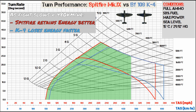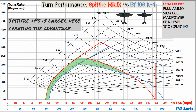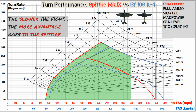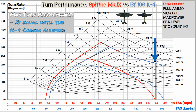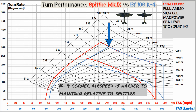As the fight slows below this airspeed, the Spitfire starts retaining energy better and the 109 loses energy faster, as the specific excess power regions diverge — the positive region for the Spitfire ends up much larger than the 109's. If the Mk9 can get close enough to the K4 while it's slow, or force it to become slow, it becomes more difficult for the K4 pilot to escape.